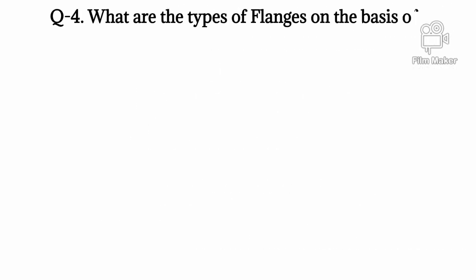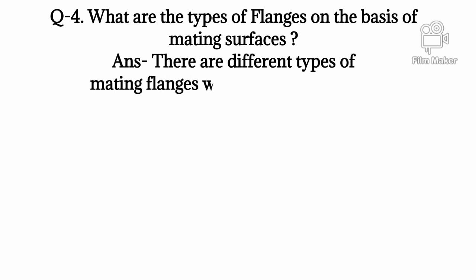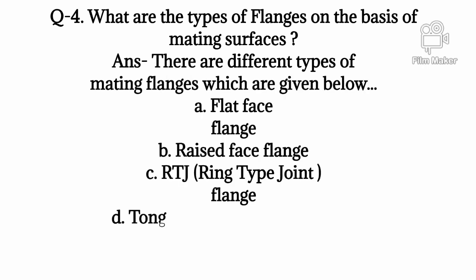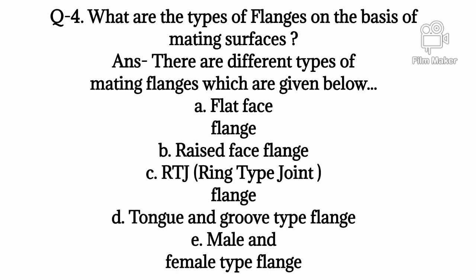Q4: What are the types of flanges on the basis of mating surfaces? Answer: There are different types of mating flanges which are given below. A: Flat Face Flange, B: Raised Face Flange, C: RTJ Ring type joint Flange, D: Tongue and Groove type Flange, E: Male and Female type Flange.